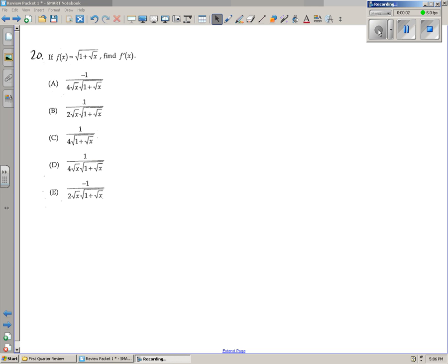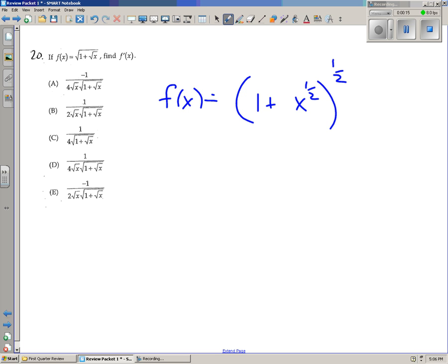Alright, number 20. We have f of x is the square root of 1 plus the square root of x. We want to find f prime of x. So rewriting without the root, we'd have big 1 half and then 1 plus x to the little 1 half here.